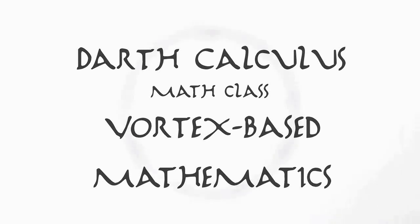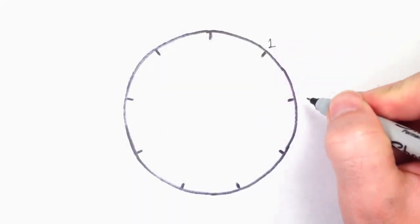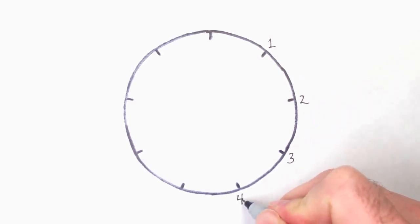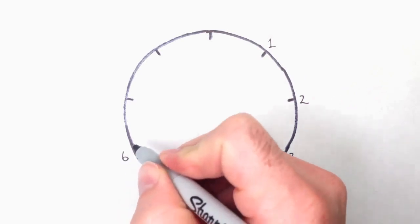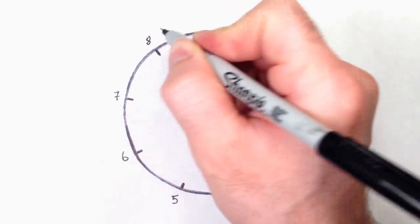Vortex-based mathematics is a form of numerology based on some idiosyncrasies of the decimal base-10 system. There is beauty in these patterns, but it's not what some make it out to be. So, let's admire the beauty, but from a position of real understanding.